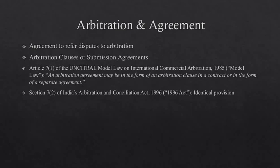Article 7, Sub-Article 1 of the UNCITRAL Model Law on International Commercial Arbitration of 1985 states that an arbitration agreement may be in the form of an arbitration clause in a contract, or in the form of a separate agreement.